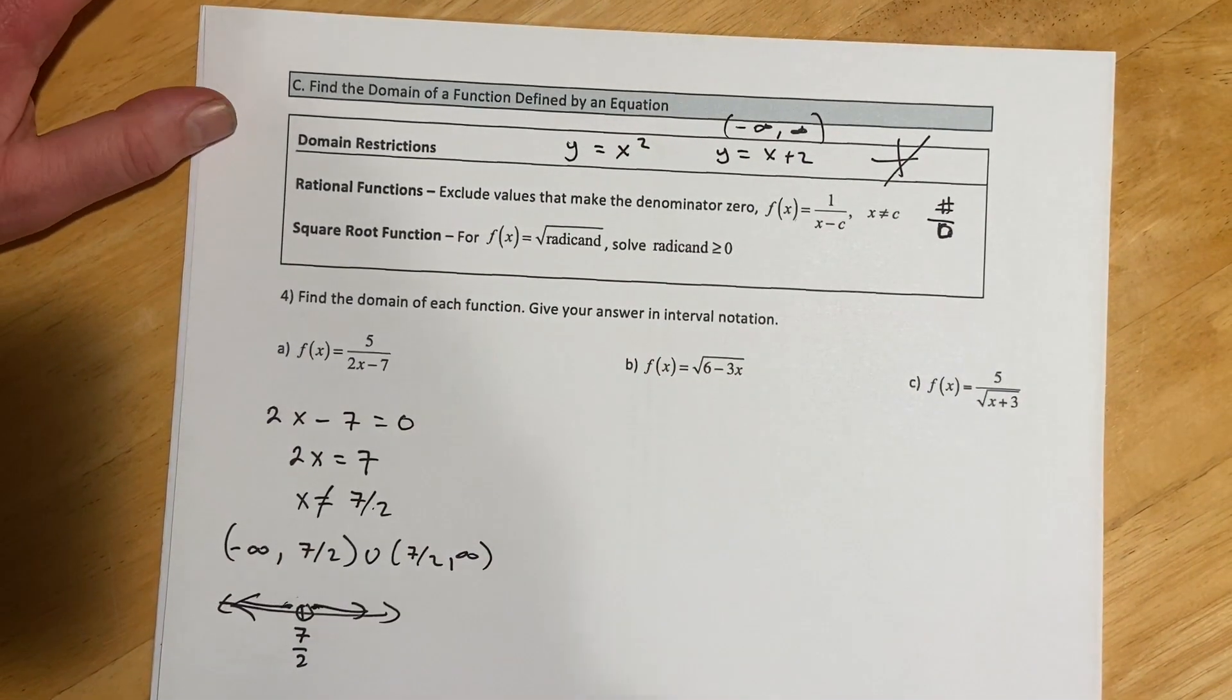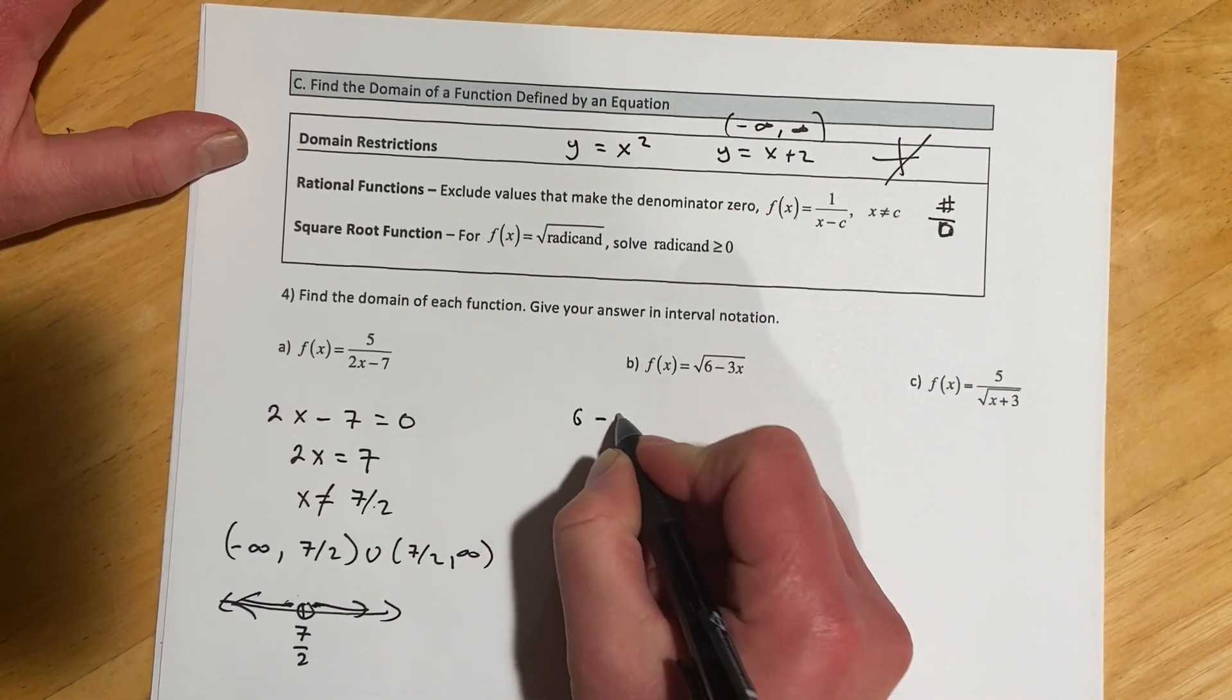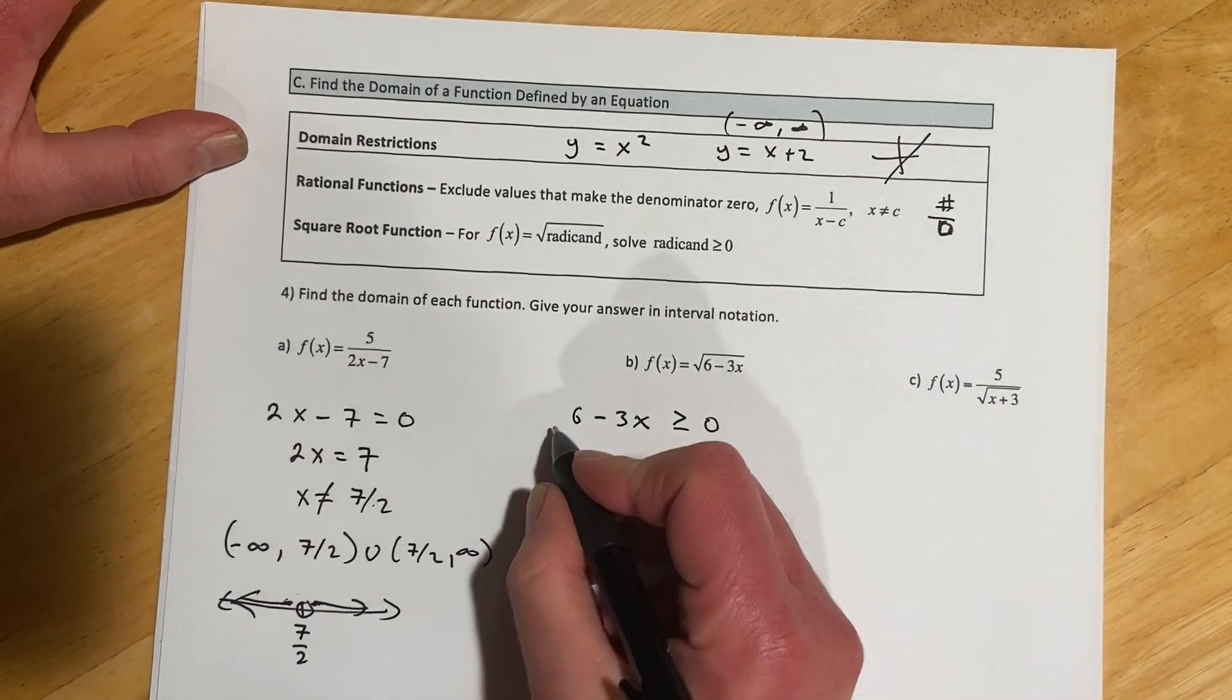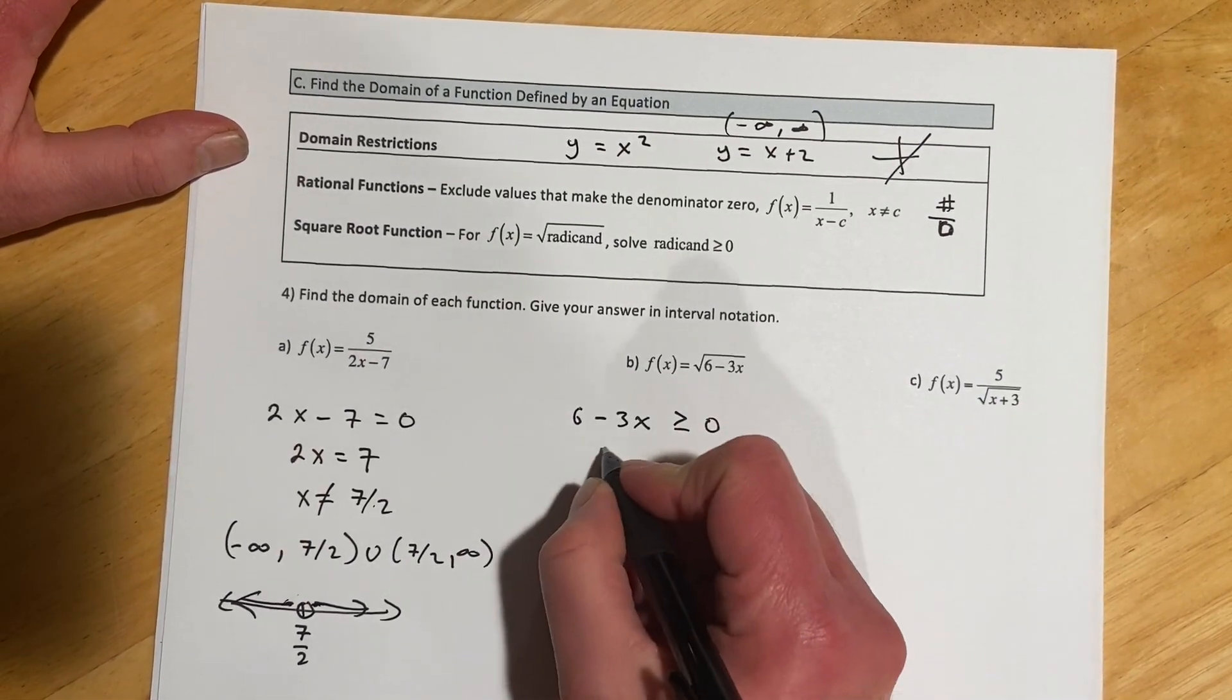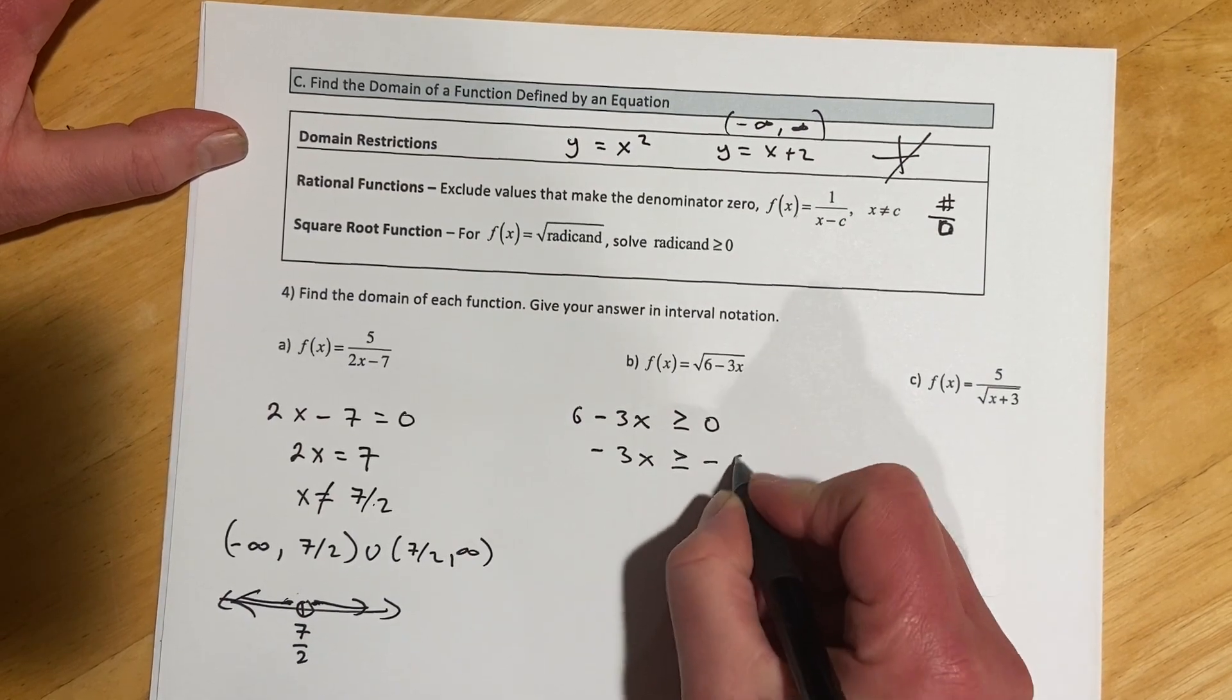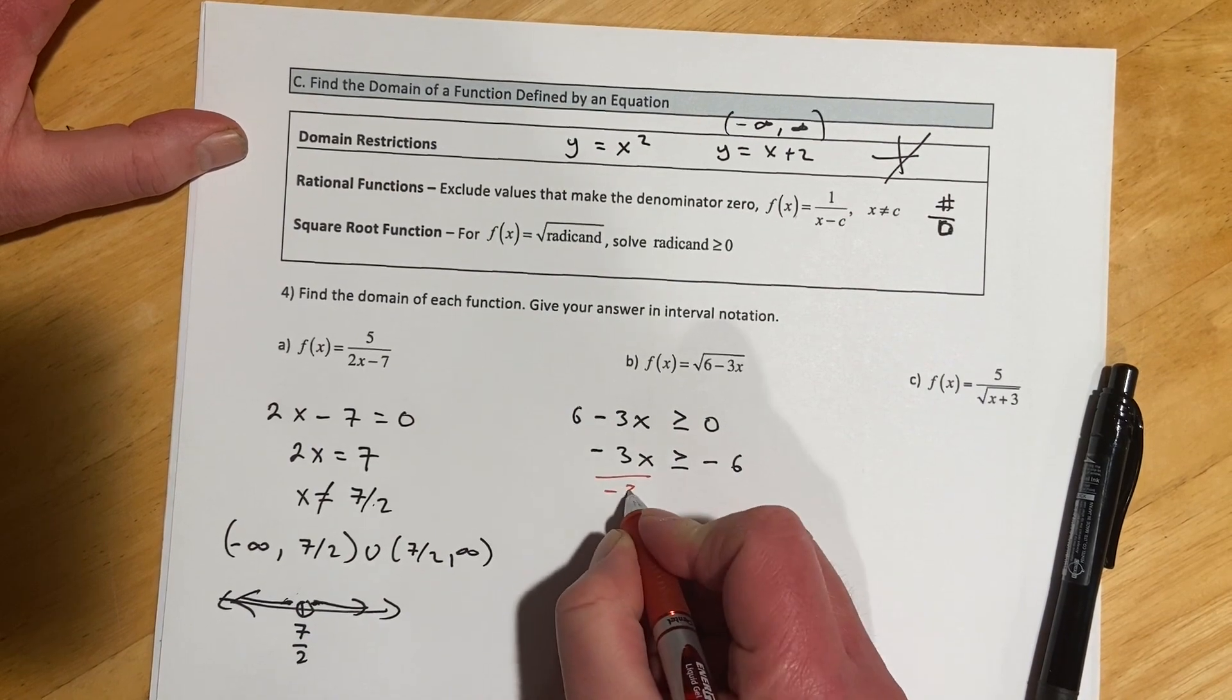For this one, this is going to be a root, and so when we have a square root like that, remember the radicand has to stay greater than or equal to zero. So here, I'll subtract the 6 over, and get negative 3x is greater than or equal to negative 6. And then I'm going to divide both sides by negative 3.